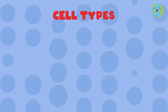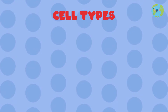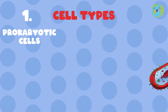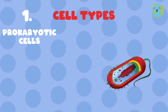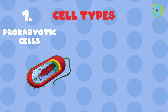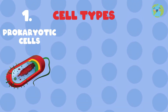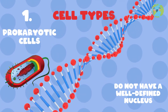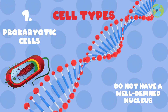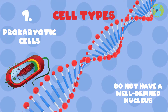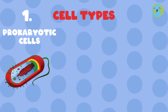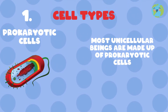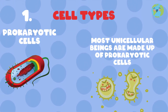Cell types: cells can be of two types. Prokaryotic cells are characterized by being simpler and less complicated than eukaryotic cells. In addition, they do not have a well-defined nucleus — which is where the genetic material, or DNA, is found — as it is dispersed in the cytoplasm. Most unicellular beings are made up of prokaryotic cells, such as bacteria or cyanobacteria.